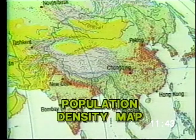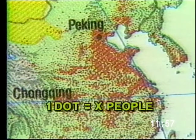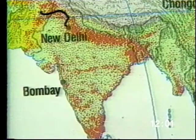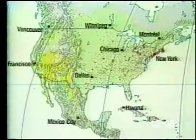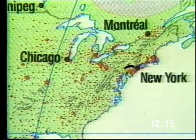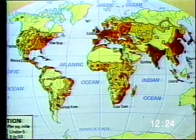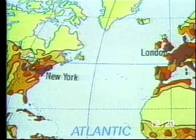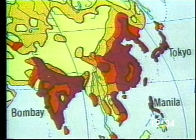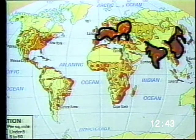A population density map shows the average number of people living within a given area of the region covered by the map. This density is usually shown in one of two different ways. One type of map uses dots, with each dot representing a certain number of people. A large concentration of dots indicates a high concentration of people. As we can see from this population density map of the United States, there are large concentrations of people on the northeastern seaboard around New York, and another heavy concentration in the Chicago area at the southern tip of Lake Michigan. Another type uses colors to identify various levels of population — the darker the color, the higher the population density. This population density map of the world shows that large parts of Europe, India, and China have very heavy population densities, only duplicated in the largest cities of the rest of the world.